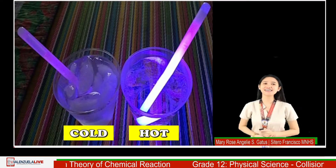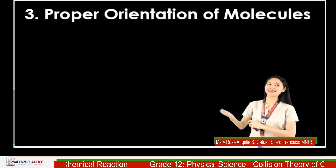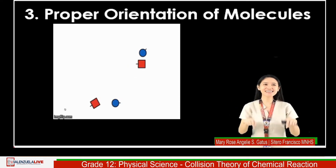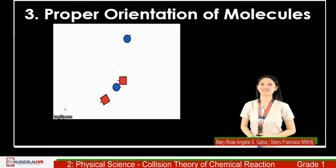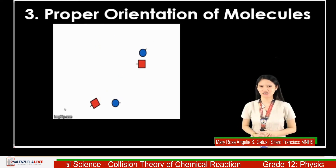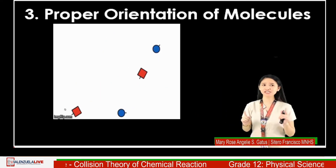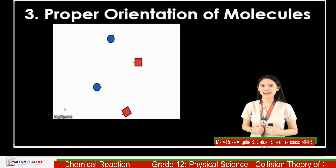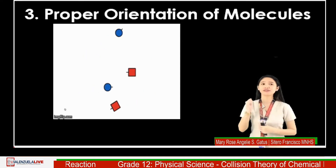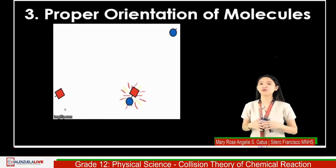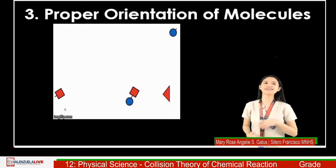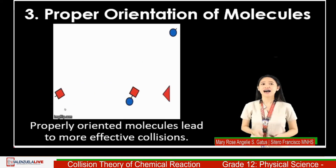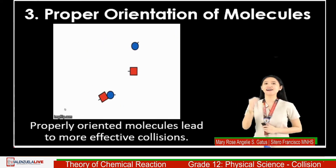The third factor is the proper orientation of molecules. Even if two molecules collide with sufficient activation energy, there is no guarantee that the collision will be successful. Molecules also need to collide with the right orientation so that the proper atoms line up with one another and bonds can break and reform in the necessary position. That is why properly oriented molecules lead to more effective collisions.